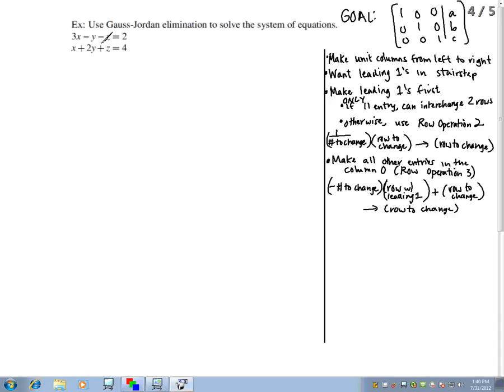Remember that Gauss-Jordan elimination uses three row operations to transform a matrix into something that looks like this, something in row-reduced echelon form. I wrote it over here as my goal.